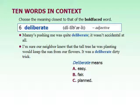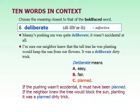'Manny's pushing me was quite deliberate — it wasn't accidental at all.' 'I'm sure our neighbors knew that the tall tree he was planting would keep the sun from our flowers. It was a deliberate dirty trick.' Deliberate means planned — not accidental, meaning it's done on purpose. In the first example, the boy meant to push — it was his plan. In the second, the neighbor intentionally hurt the flowers by planting a tall tree.